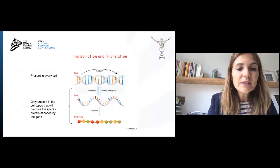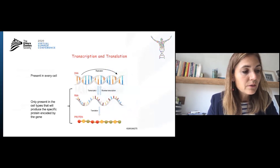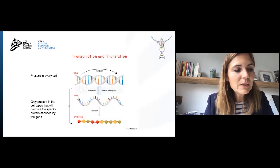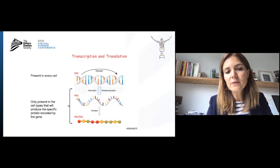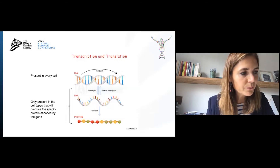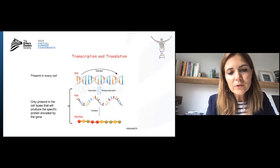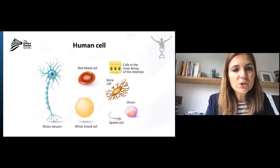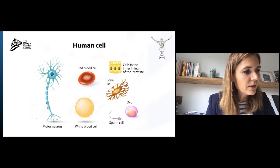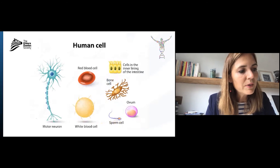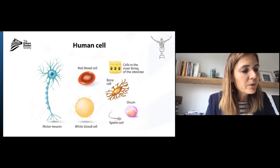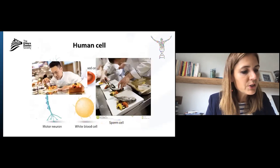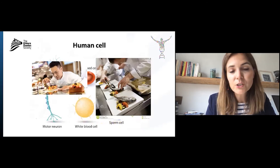Our DNA is present in every cell of our body. Genes are translated into proteins through the production of an intermediate molecule called RNA. RNA resembles DNA, but it's a single-stranded molecule. These RNA molecules are then translated into proteins, and most genes are not expressed into protein by every cell type. There are many specialized cell types in our body, such as red blood cells, white blood cells, sperm cells, bone cells, cells of the intestine, neurons, etc. These specialized cells will only make certain types of protein. You can compare it with our cookbook analogy — a pastry chef will produce different products than a chef that works in a fish restaurant.